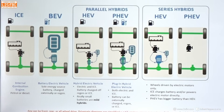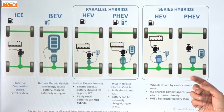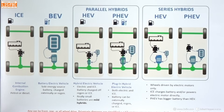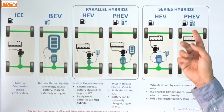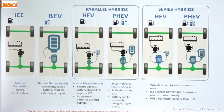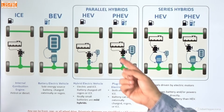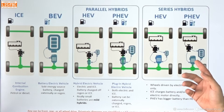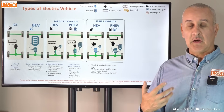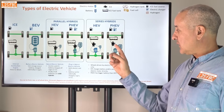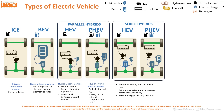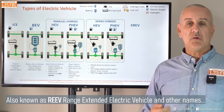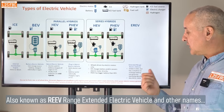The series PHEV version is similar but with a larger electric motor and a larger battery, and two energy sources — so you can charge the battery externally, just as with a parallel PHEV. In both series variants, the electric motor does all the driving and the ICE engine is only there to generate electricity, not to drive the wheels.